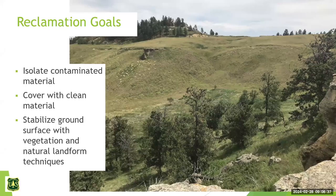Our cleanup plan is to isolate contaminated material, place it in on-site repositories, cover it with clean material, and then anchor and stabilize the ground with vegetation and landforms. We're using natural landform design, which incorporates features of the surrounding landscape so we can match that landscape. It also provides a good example of what the land surface eroded to, helping us jump-start geomorphological processes so it will be more stable in the future.